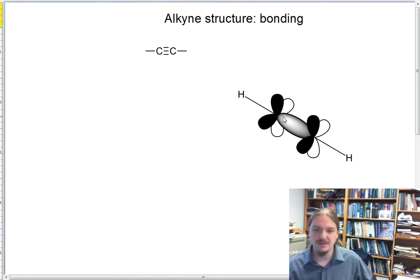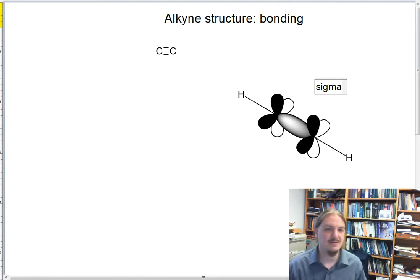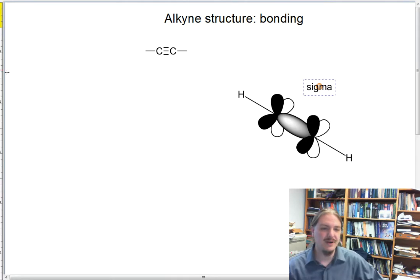One of the three bonds in the alkyne is a sigma bond and we're representing the sigma bond as this gray orbital overlap between the two carbon atoms.